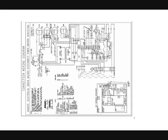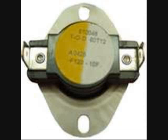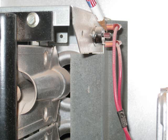While your burner is going, you have several sensors which protect your unit from overheating. The rollout sensor is called this because it is supposed to sense flames which are rolling out from where they are supposed to be. These can be located at the burner, on the blower housing, and on the flue pipe itself.